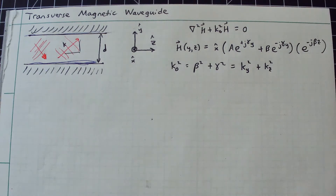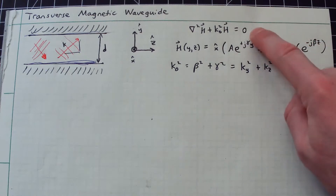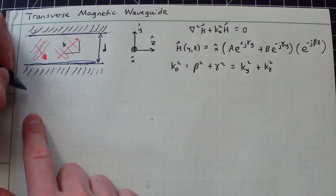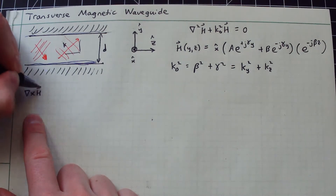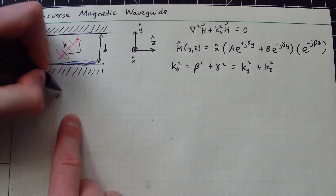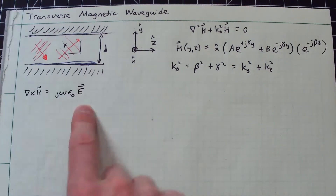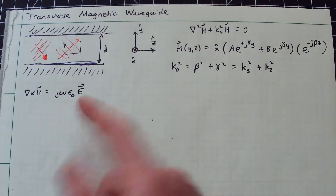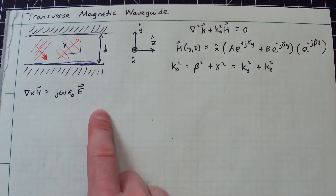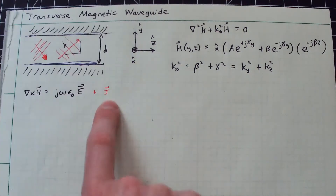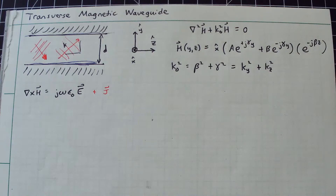I don't really have boundary conditions on the magnetic field directly, but I do know what the electric field must satisfy. So we invoke Ampere's Law: ∇×H = jωε₀ E. This is Ampere's Law without any sources — normally you'd include a current density term, but there are no sources in this system, so we ignore that.